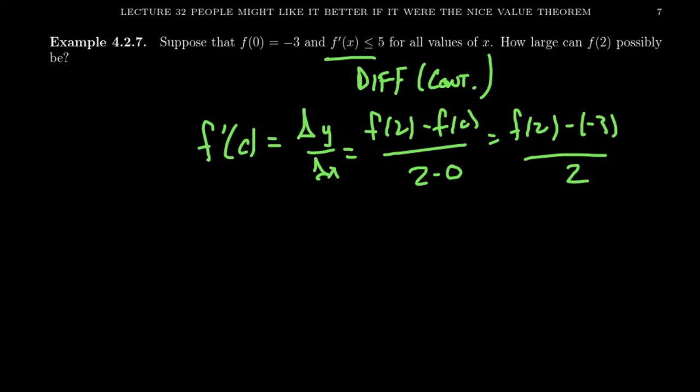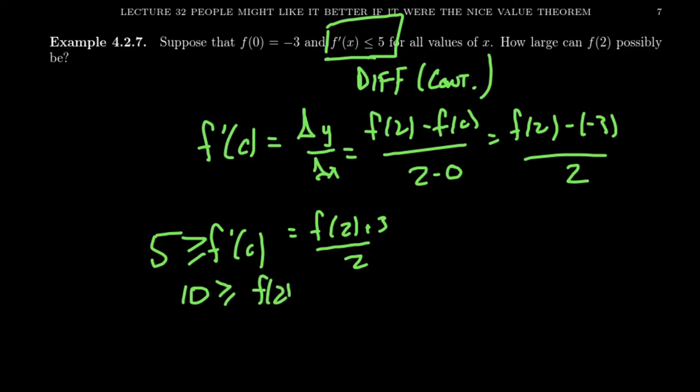And so we end up with this statement that f of 2 plus 3 over 2 is equal to f prime at c. But we do know something about the derivative. The derivative is less than or equal to 5. And so now we can start solving this inequality for f of 2. Times both sides of the inequality by 2, we get 10. It's greater than or equal to f of 2 plus 3.